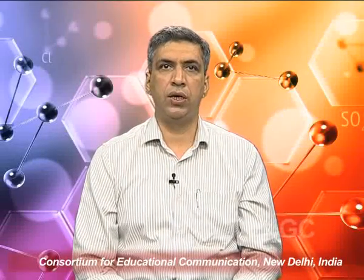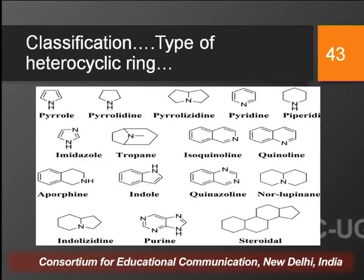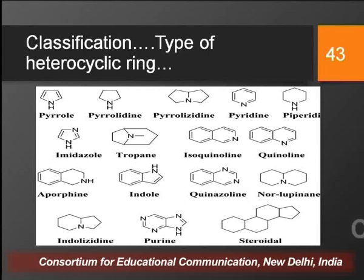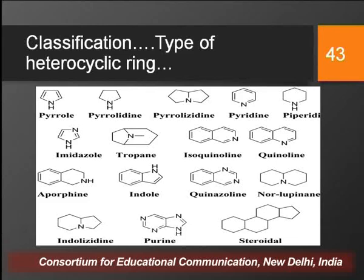Typical alkaloids are those which have a nitrogen atom in their heterocyclic ring, irrespective of whether the alkaloid has been derived from an amino acid or not. Largely, typical alkaloids have nitrogen in their heterocyclic ring, and the majority are derived from amino acids, except purine alkaloids which are not. Since this classification is based on presence or absence of nitrogen in the heterocyclic ring, purine alkaloids also come under typical alkaloids.